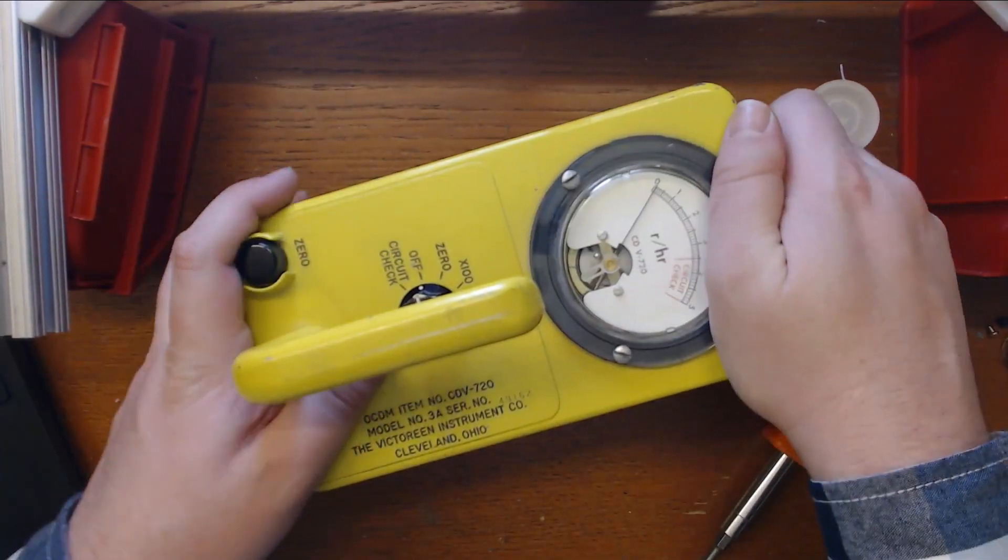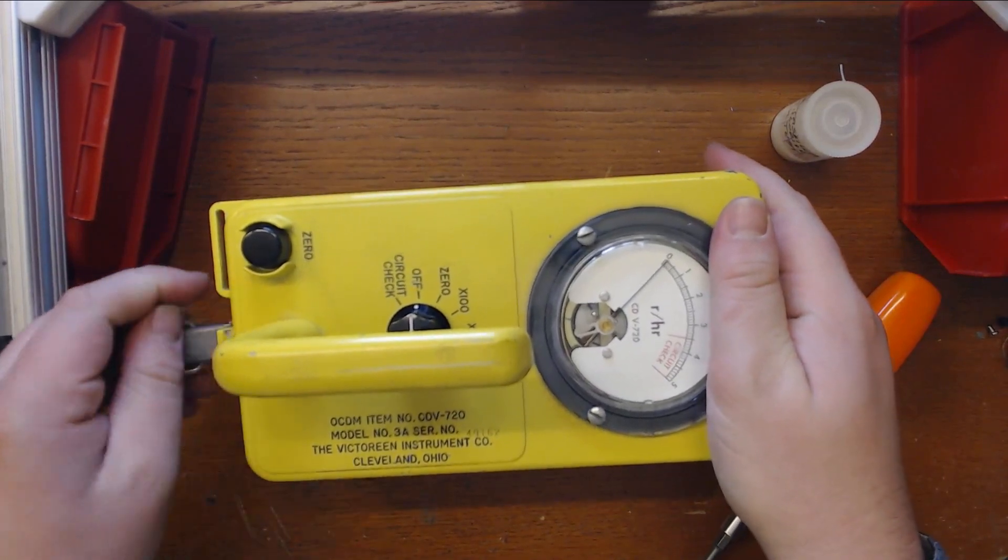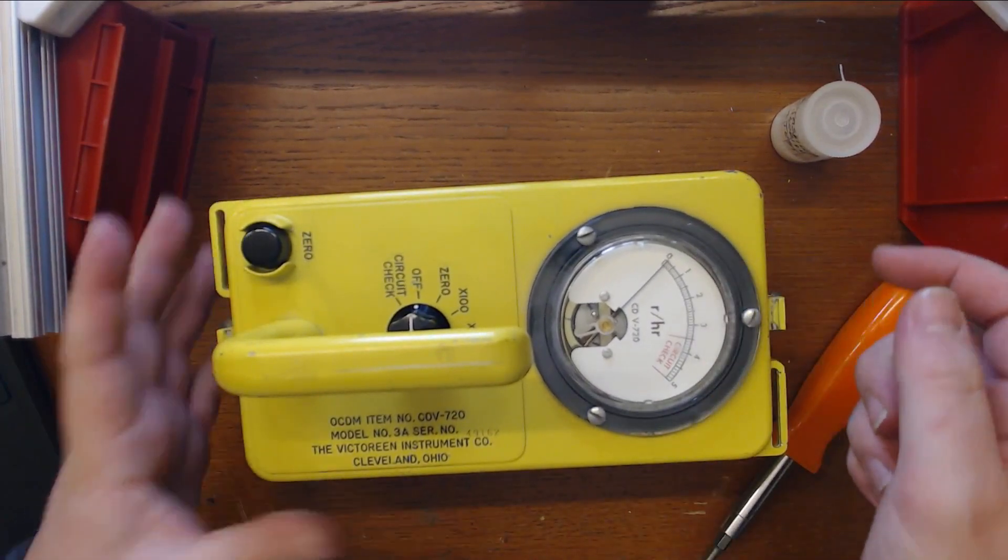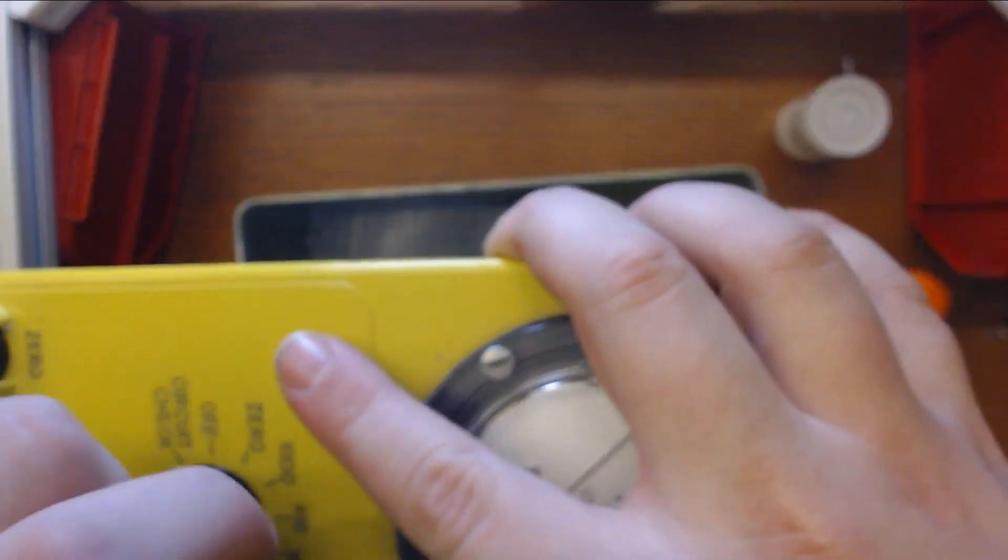So let's pop this thing open and take a look at what's inside. Open the clasp there and there, and be careful not to touch the detector, which I know is on this side. Oop, I was wrong, it's on this side.